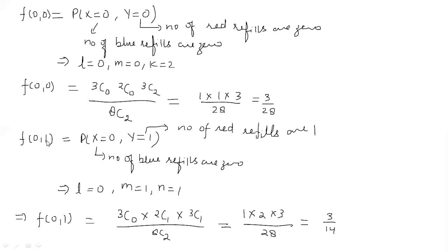Isi tarah se f(0,1) ka matlab kya hai? Ki x ki value 0 hai, y ki value 1 hai. Matlab, ek red refill hum ne nikalhi hai. Ek red refill hai jo hum ne do nikalhi thi. Blue refills, us mein se ek red hai aur ek green hai. Kyunki blue refills zero hai. To ek red refill, kitne tarike se nikal sakti hai. 2 mein se, 2C1. Aur ek green refill, kitne tarike se nikal sakti hai. 3 mein se, 3C1. Divided by 8C2 again. You will get 3 upon 14.